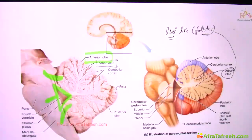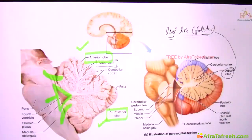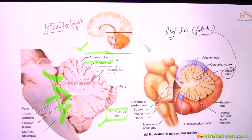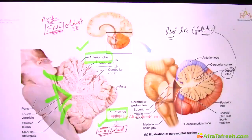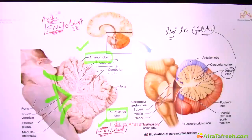The cerebellum has three lobes: anterior lobe, posterior lobe, and flocculonodular lobe. The flocculonodular lobe is the oldest — archicerebellum. The posterior lobe is the latest in evolution — neocerebellum. The anterior lobe is intermediate in evolution. So oldest is flocculonodular (archicerebellum), intermediate is anterior lobe (paleocerebellum), and the most recent is the posterior lobe (neocerebellum).